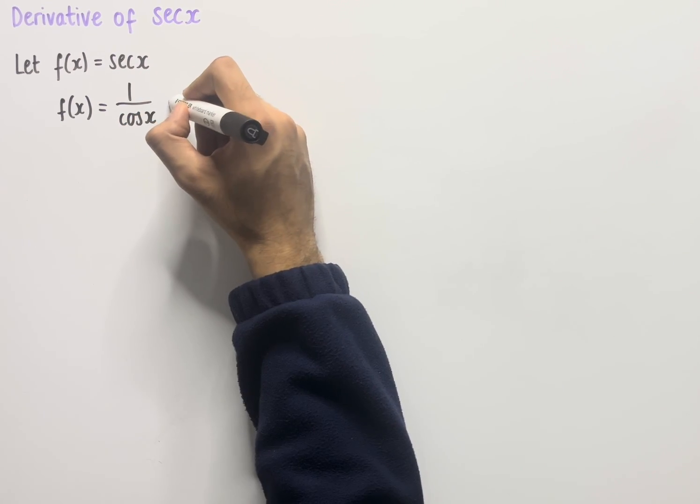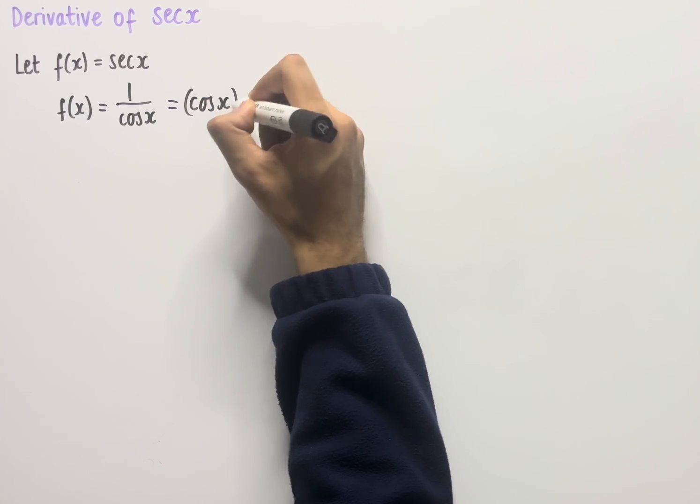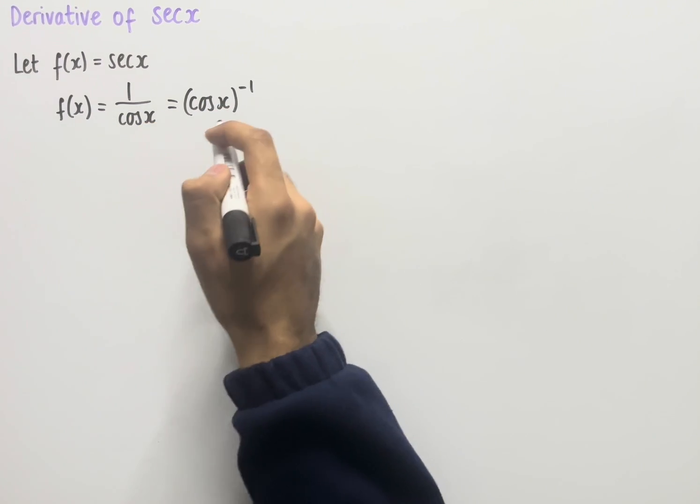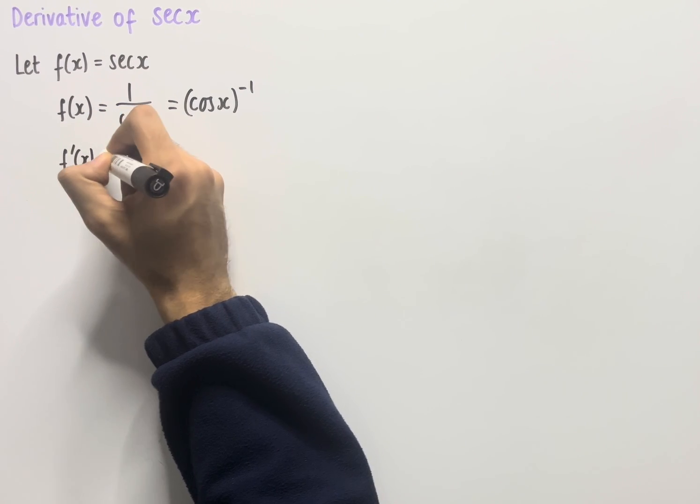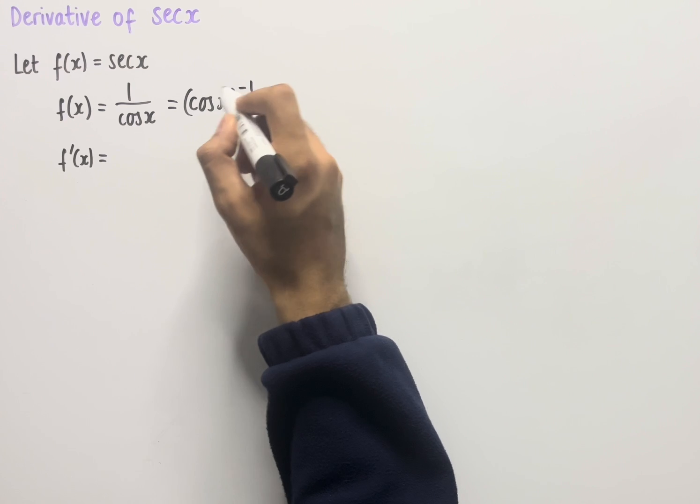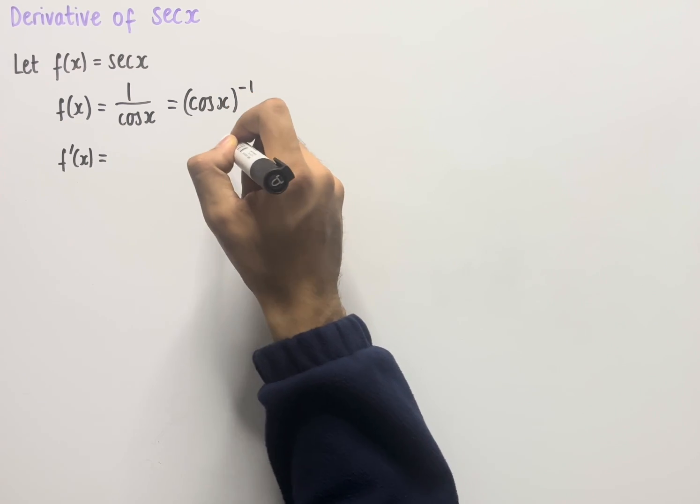Now we can rewrite this in index form as (cos x) to the power of minus 1. To work out the derivative of this, we have f'(x) as the notation, and we're now going to use the chain rule on this function to differentiate it and work out the derivative.